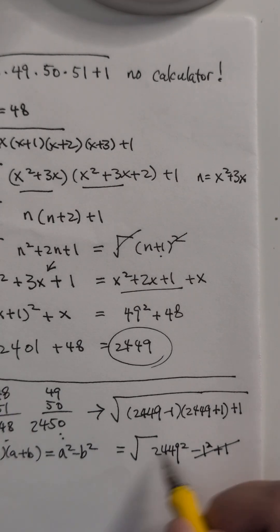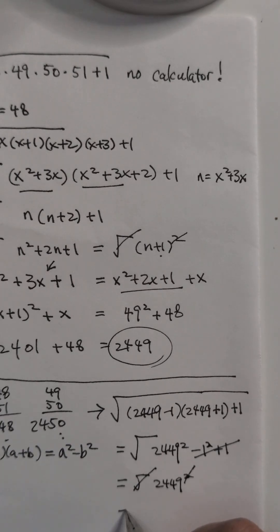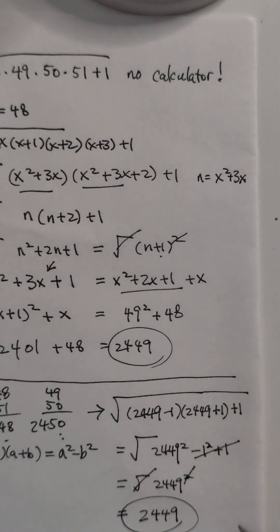So get rid of that. And because it's square root of 2449 squared, we can get rid of the square root and the square. Let me write that very neat first, right? And then you can get rid of that too. So the answer is 2449. Very quick.